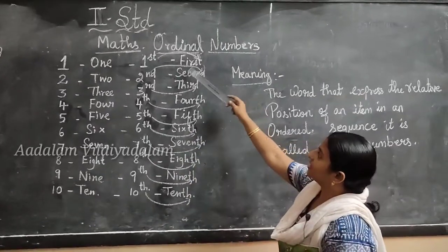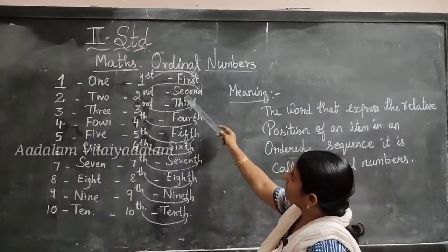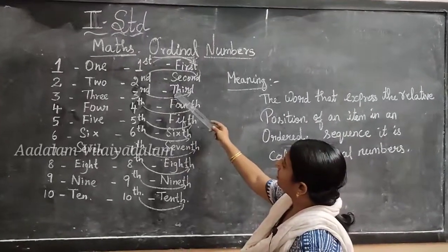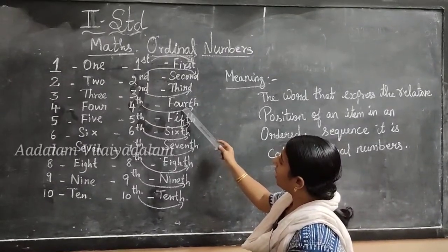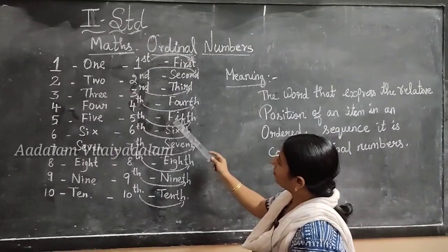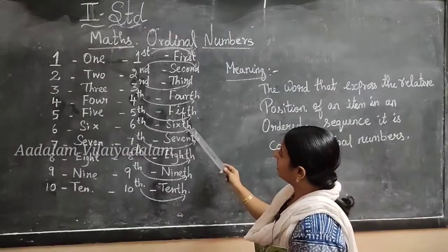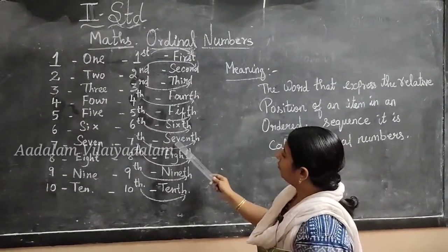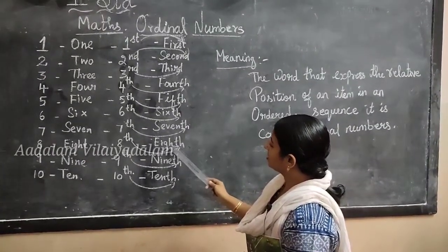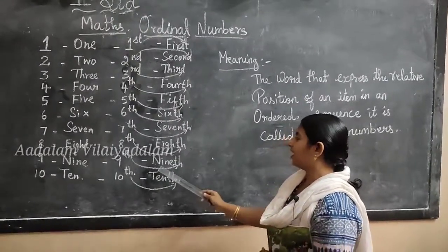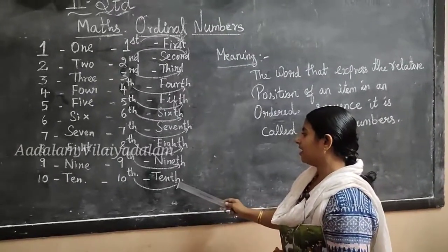How to write in spellings? First — F, I, R, S, T. Second — S, E, C, O, N, D. Third — T, H, I, R, D. Fourth — F, O, U, R, T, H. Fifth — F, I, F, T, H. Sixth — S, I, X, T, H. Seventh — S, E, V, E, N, T, H. Eighth — E, I, G, H, T, H. Ninth — N, I, N, E, T, H. Tenth — T, E, N, T, H.